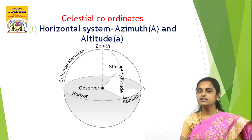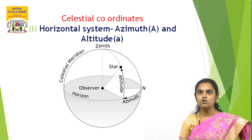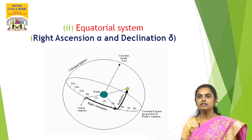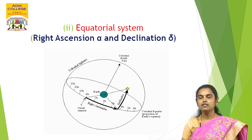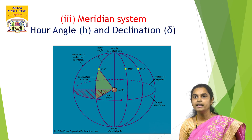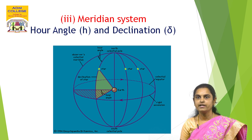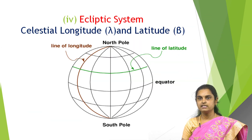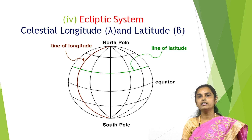The first coordinate system is the horizontal system, where the horizon is the reference circle and azimuth A and altitude are the coordinates. The second is the equatorial system, where the equatorial line is the reference circle and right ascension A and declination delta are the coordinates. The third is the meridian system, where the meridian is the reference circle and hour angle H and declination delta are the coordinates. The fourth system takes the first point of Aries as the reference, and celestial longitude lambda and latitude beta are the coordinates.